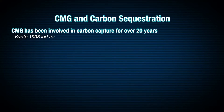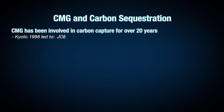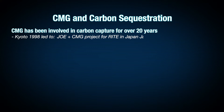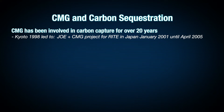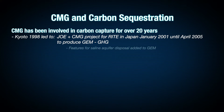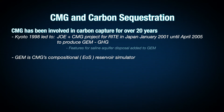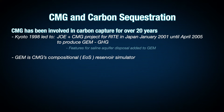It all started back in Japan and Kyoto in 1998, which led to Japan Oil Engineering and CMG having a Joint Research Project for the Research Institute of Technology of the Earth in Japan. This ran from January 2001 until April 2005 and produced a product we called GEM GHG — the GHG standing for greenhouse gas. This is where we added an extensive range of features to our GEM reservoir simulator, which is our compositional equation-of-state-based reservoir simulator.